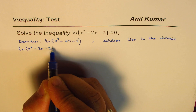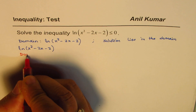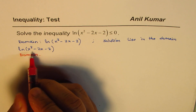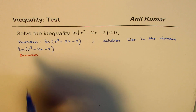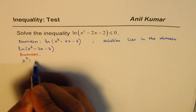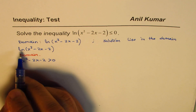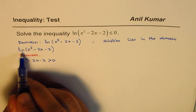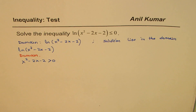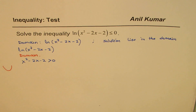For ln(x² - 2x - 2), what is the domain? Let's calculate this. To find the domain, we have to solve another inequality. The inside part should be greater than zero. So we have x² - 2x - 2 > 0. Only then the natural logarithm is defined. We know this is a parabola opening upward, and we need to find where the zeros are.